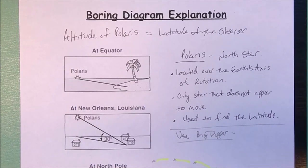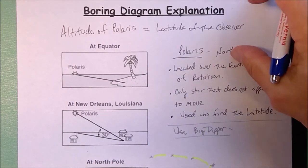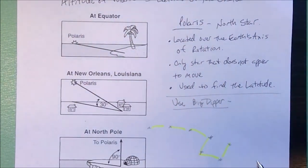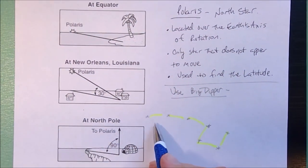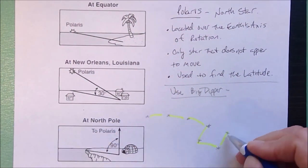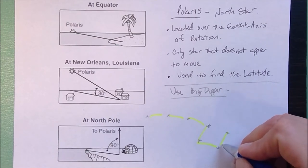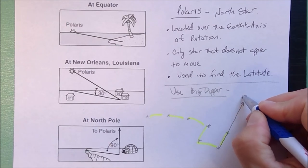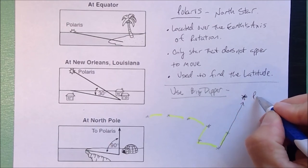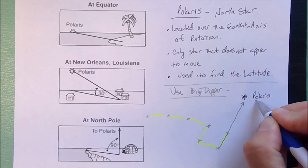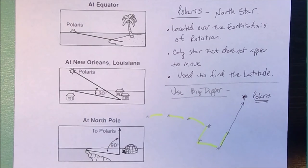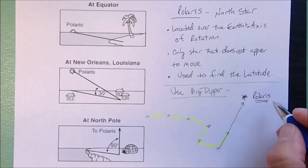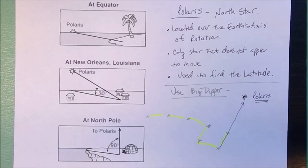Now these two stars here in the Big Dipper are called the pointer stars. And if you follow these stars in a straight line, the next star that you're going to see is Polaris. So Polaris is the North Star. It's also the tail star of the Little Dipper.